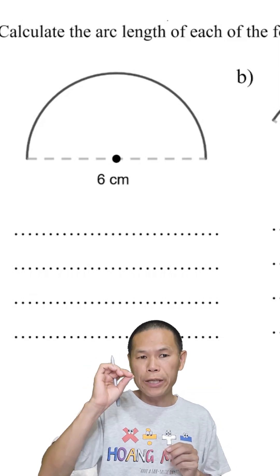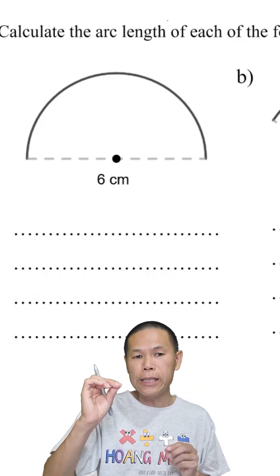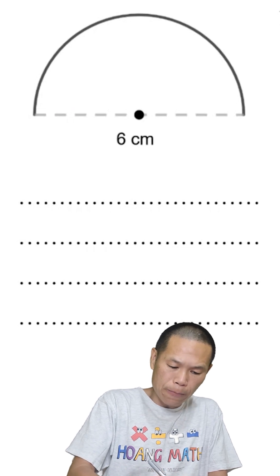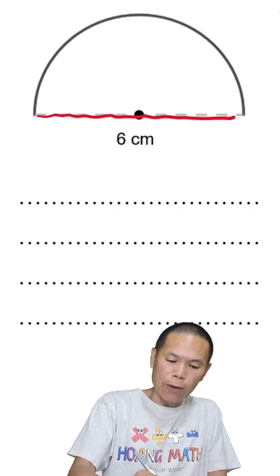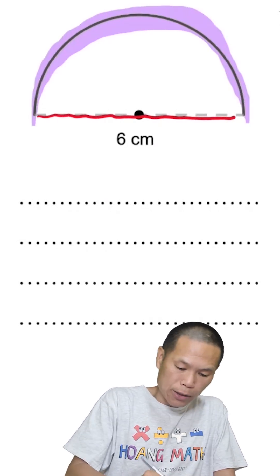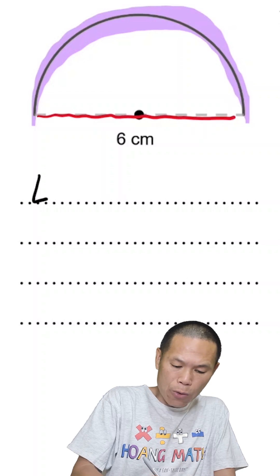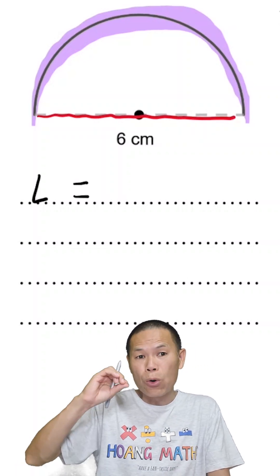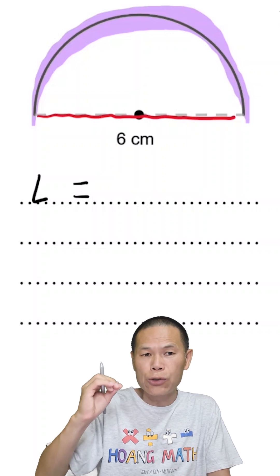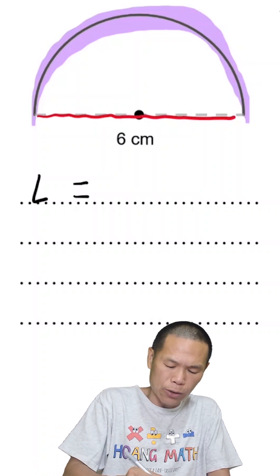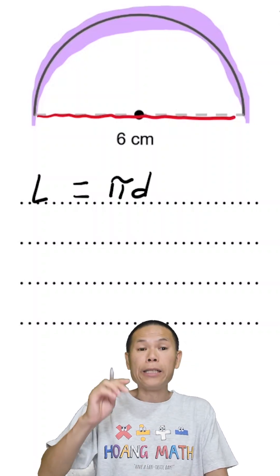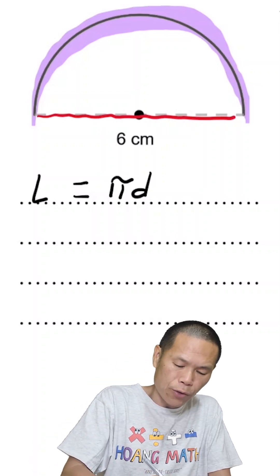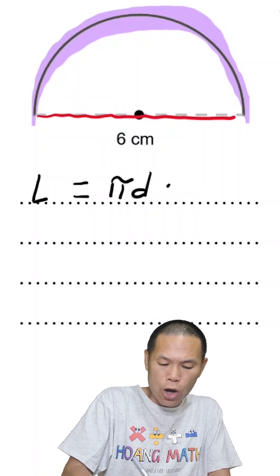The circumference of a circle is π×d or 2π×r. For a half circle, we need to calculate this arc length here, so we write L. The circumference of a full circle is 2π×r or π×d — in this case I'll use π×d as it's easier. This gives the circumference of the whole circle.